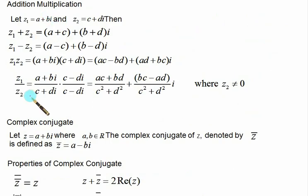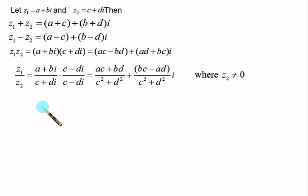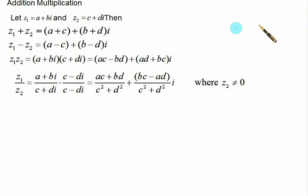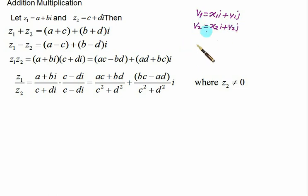Algebra of complex numbers is done in the same way as regular algebra. Suppose we have two complex numbers z1 and z2 where a, b, c, d are all real numbers. When you add them, add the real parts and add the imaginary parts. When you subtract, do the same. This is almost the same as vector practice — just as vectors allow addition of like components, complex numbers allow addition of real parts and imaginary parts separately.